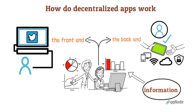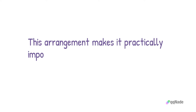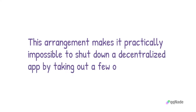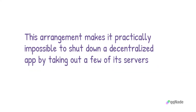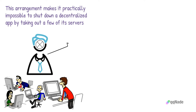Decentralized apps share the load of their back end to multiple servers. This way, the app can function faster, thanks to the computing power of multiple servers. This arrangement makes it practically impossible to shut down a decentralized app by taking out a few of its servers. This also means that no one person has control over the servers.